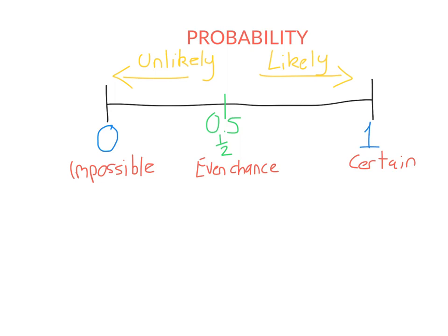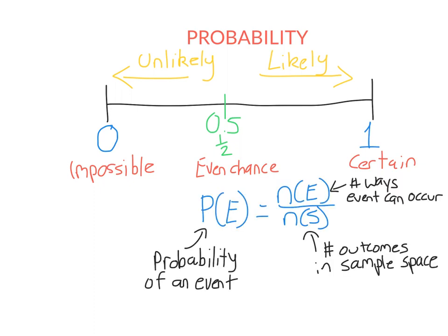But how do we actually calculate the probability of an event? The formula we use is now on your screen. The probability of an event is the number of ways the event can occur divided by the total number of outcomes in the sample space. We use the notation P with brackets to mean 'calculate the probability of whatever's in the brackets,' and NS means the number of outcomes in the sample space. Remember, the sample space is a list of all the possible outcomes — something you would have learned in year 7.